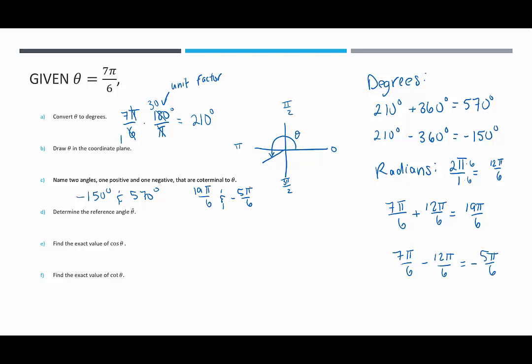Part D, determine the reference angle for theta. The reference angle is the acute angle that lies in between the terminal side of theta and the x-axis. It's up to you if you want to use degrees or radians. We're going to take our given theta, 7 pi over 6, and subtract pi from it. Pi is 6 pi over 6, and then we end up with pi over 6. So the reference angle theta hat is pi over 6 or in degrees this would be 30 degrees.